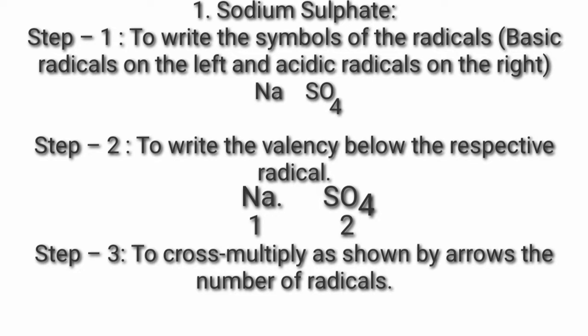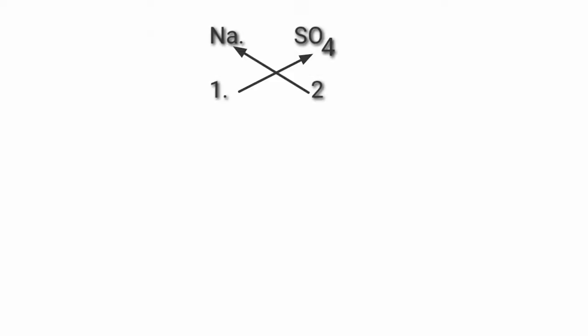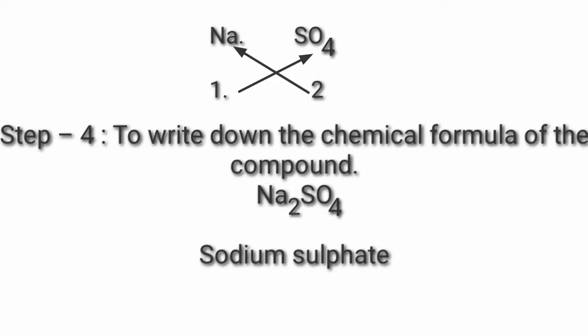Step 3: Cross multiply as shown by arrows the number of radicals — Na multiplied by 2, SO4 multiplied by 1. Step 4: Write down the chemical formulae of the compound — Na2SO4. Sodium sulfate.